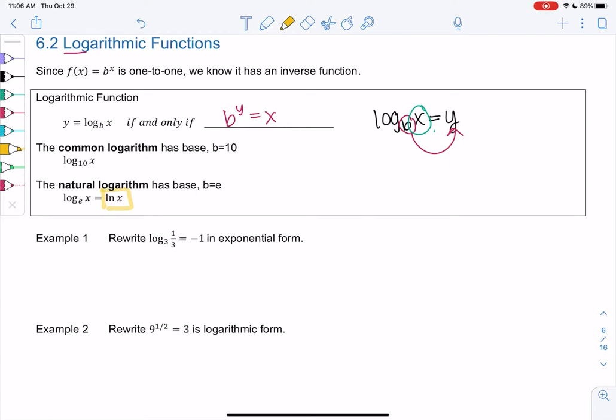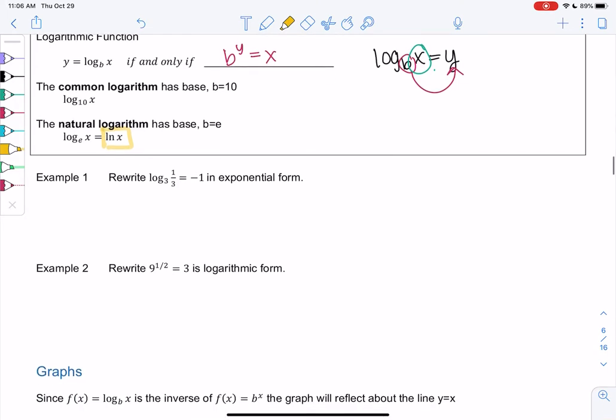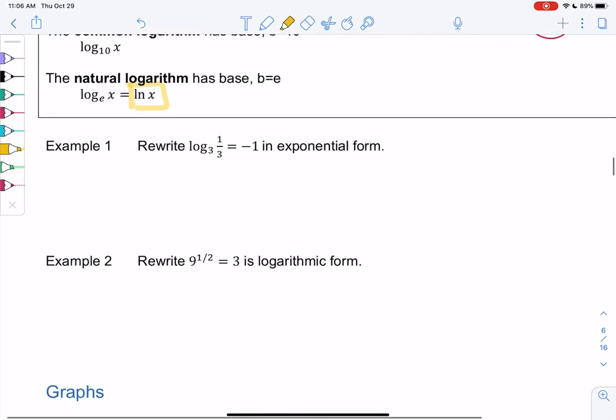Let's try some examples. Let's rewrite log base 3 of one-third equals negative 1 in exponential form. So I'm going to take the 3, draw an arrow to the negative 1. So 3 to the negative 1 equals what's inside the log, one-third. And we learned in the exponent section, negative powers are reciprocals. So 3 to the negative 1 equals one-third is a true statement.